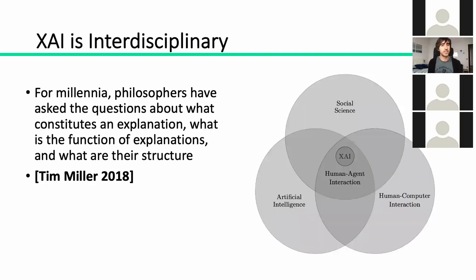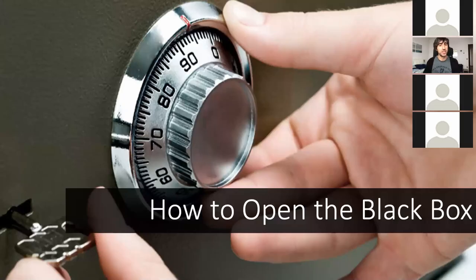An ideal explainer should meet the user's background. Another important aspect is the time the final user has to understand the explanation, because in critical conditions the explanation can be less accurate but must be very easy to interpret and fast to read. This connects to an important point highlighted by Tim Miller: explainable AI is interdisciplinary and lies at the crossroads between artificial intelligence, social science, and human-computer interaction. Only when we deal with all these aspects together will we be able to truly open the black box from a human perspective.